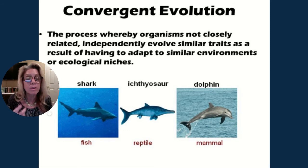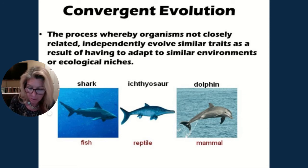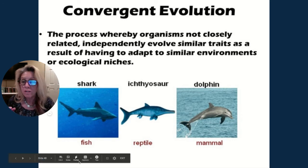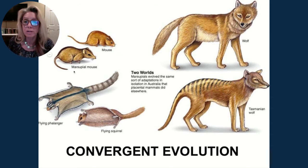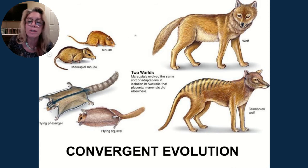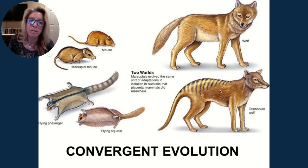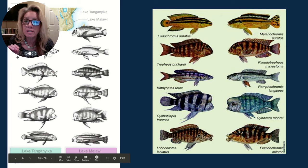Analogous structures have similar functions. A bird, a bat, and a bee all fly, but their wing structures differ — a result of convergent evolution. Another example: the placental mouse versus the marsupial mouse look very similar, exploiting their niche in the same way. Flying squirrels versus the flying phalanger exploit their environments similarly through convergent evolution because they share similar habitats. You can also see this in African lake cichlids, which parallel each other across lakes that are miles apart.